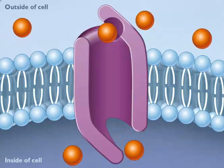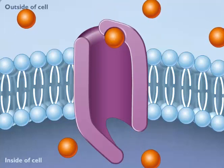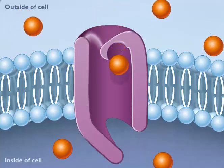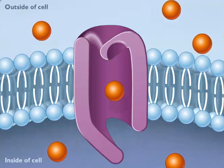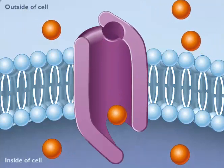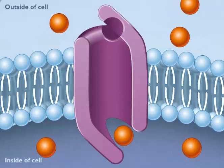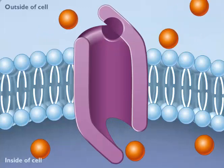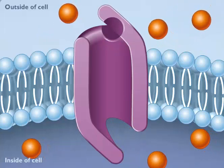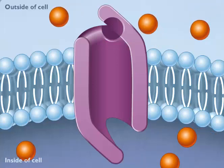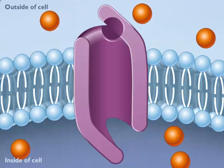Facilitated diffusion is similar to simple diffusion in that both involve movement of molecules down their concentration gradient, and this movement is carried out without any input of energy. However, in facilitated diffusion, the movement of molecules will only take place if it is facilitated or helped by a special protein carrier in the membrane.